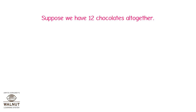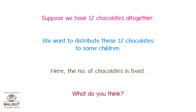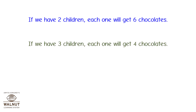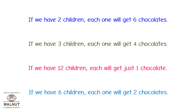Suppose we have 12 chocolates altogether and we want to distribute them to some children. The number of chocolates is fixed. If we have 2 children, each one gets 6 chocolates. If we have 3 children, each gets 4. If we have 12 children, each gets 1. If we have 6 children, each gets 2 chocolates.